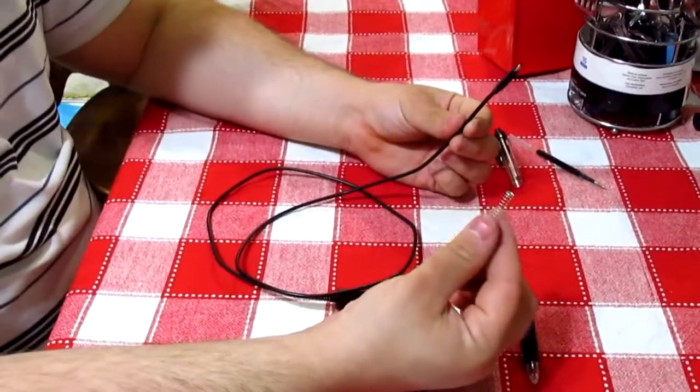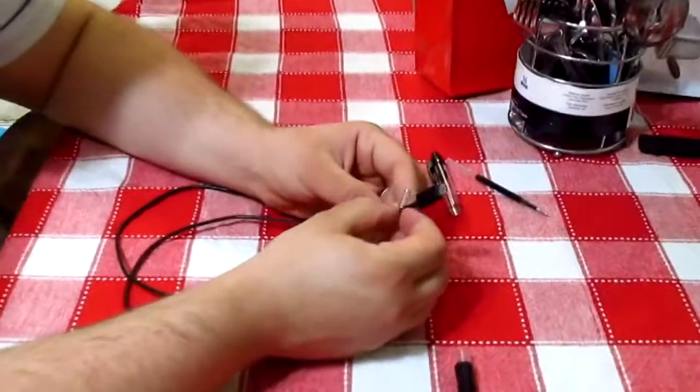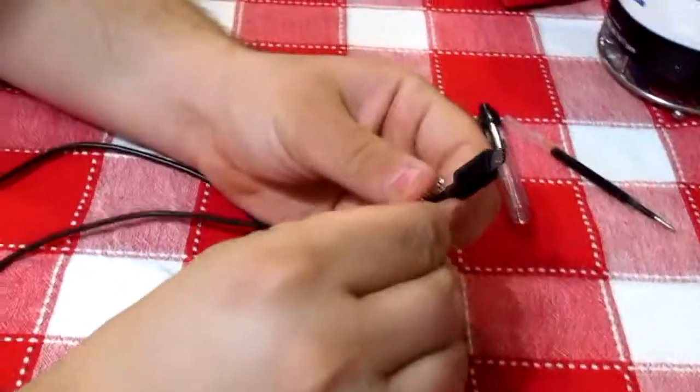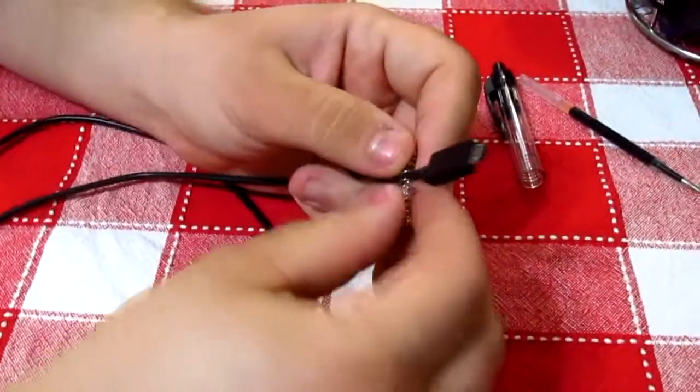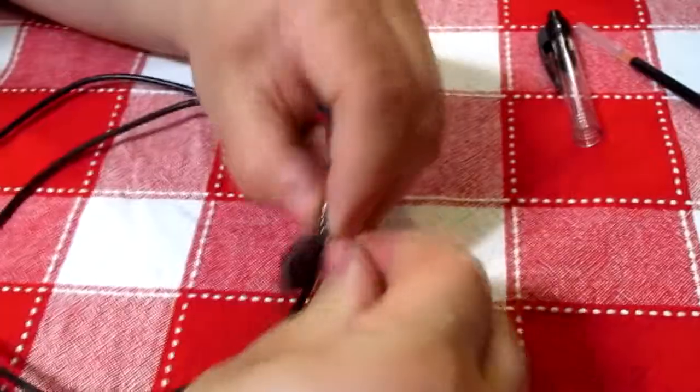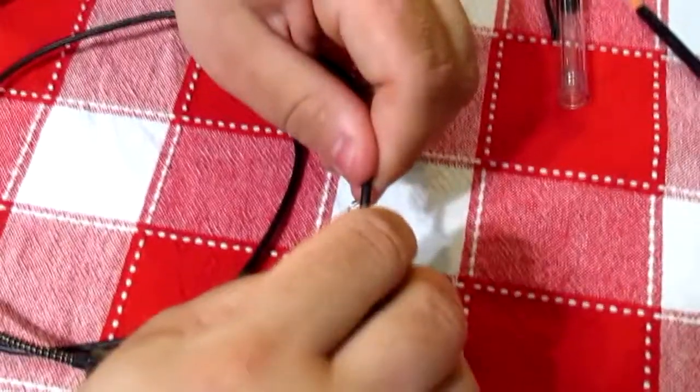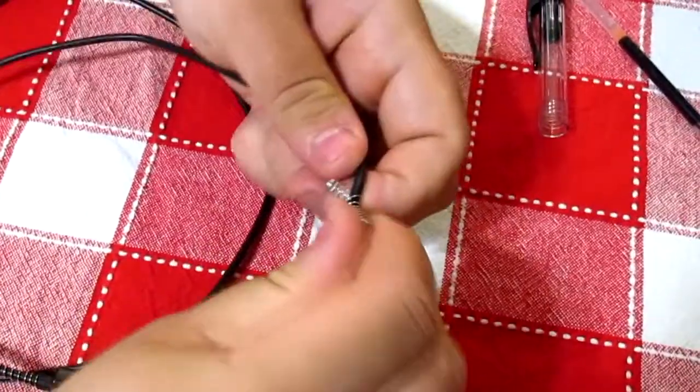Alright, the idea is to get this spring on here. You start by pressing it down onto it like that, wrap it once around like that and you've got it started. I'm going to just loop it around.